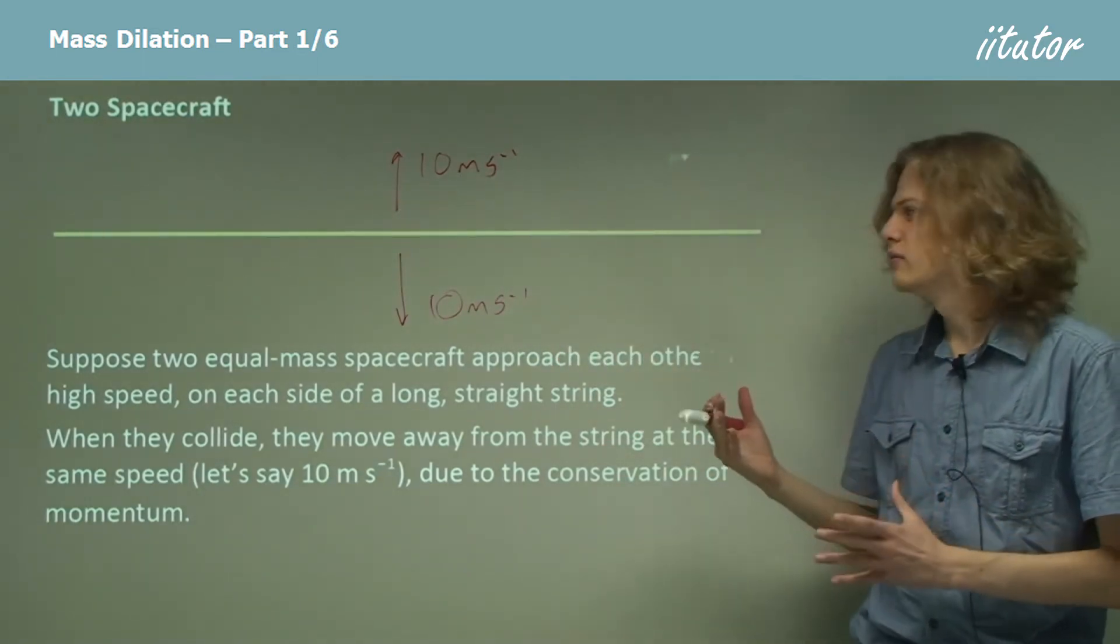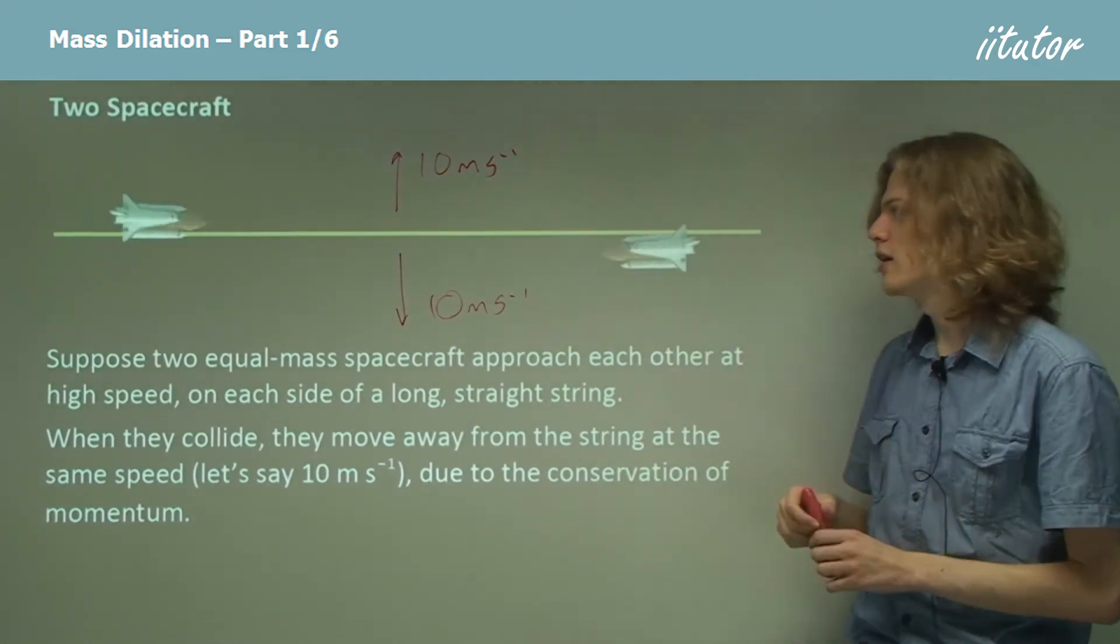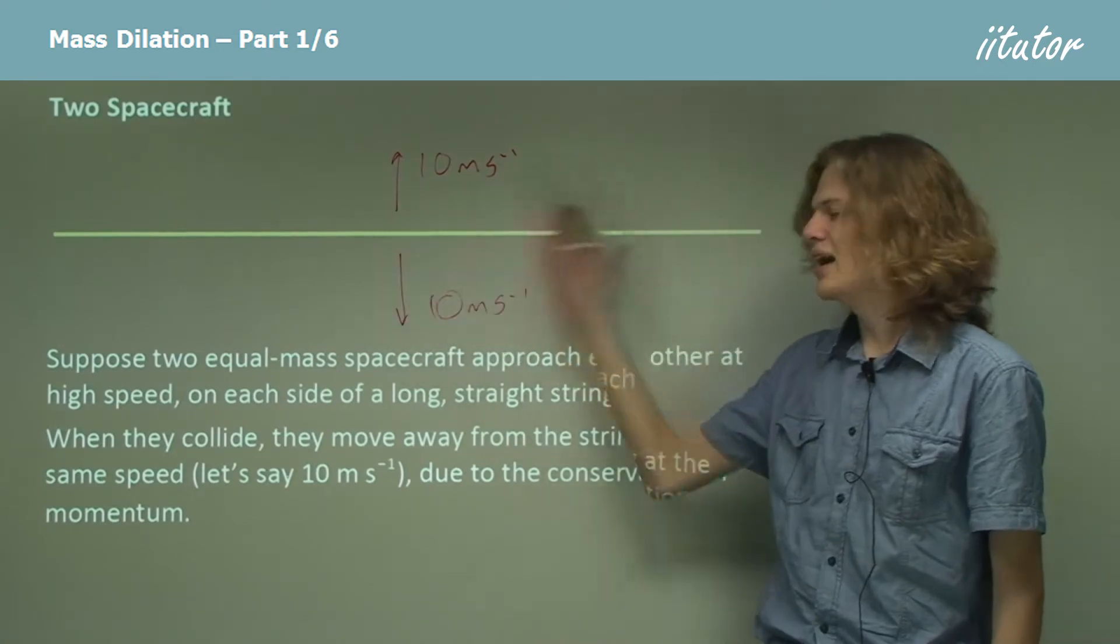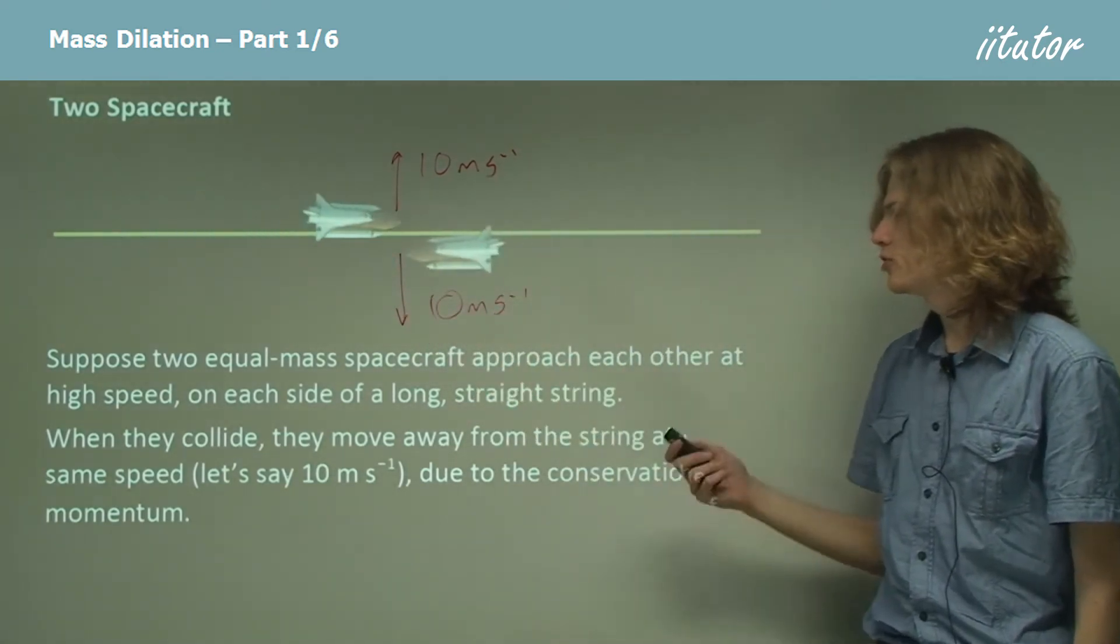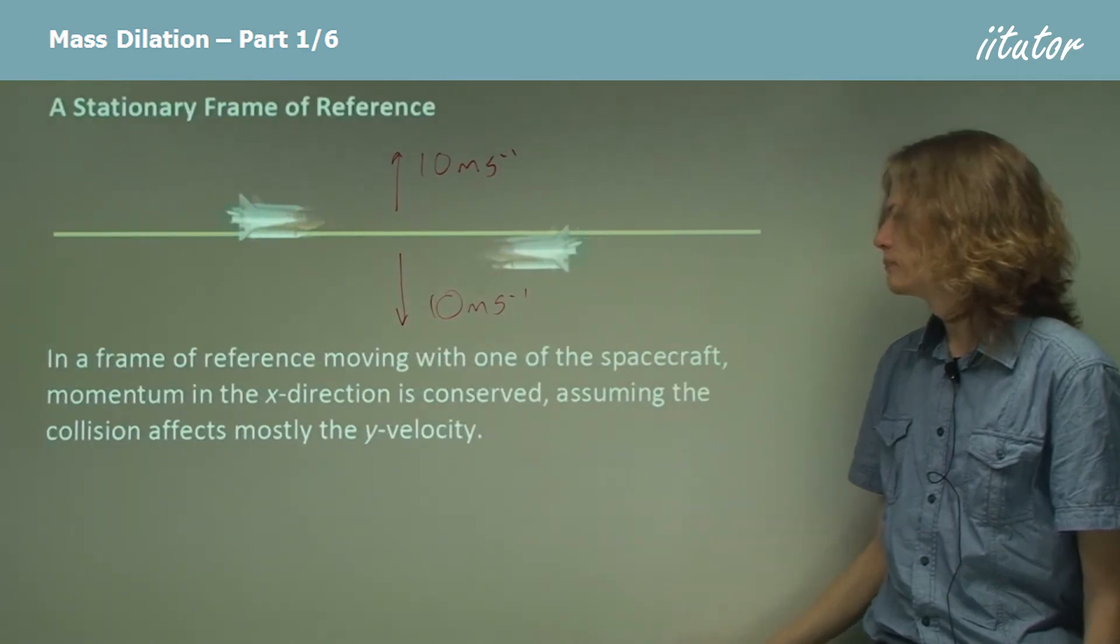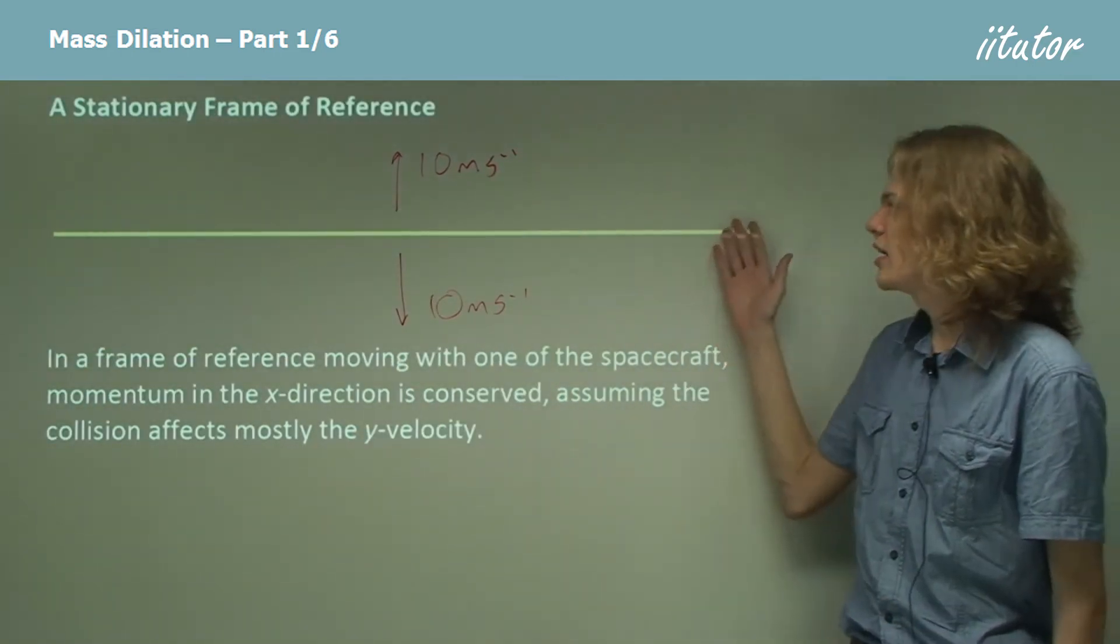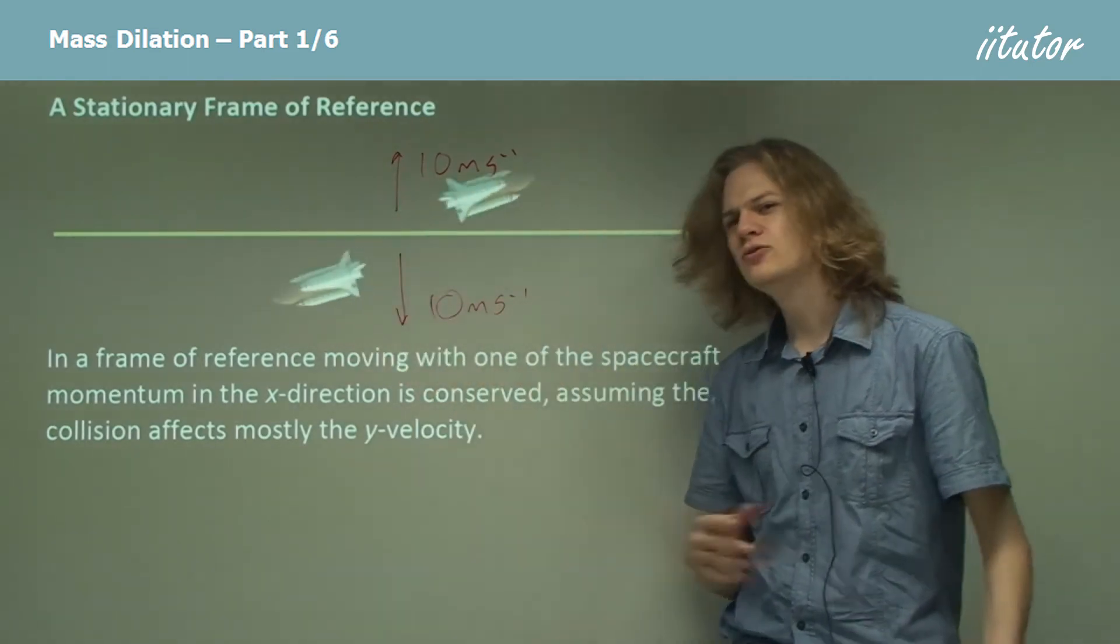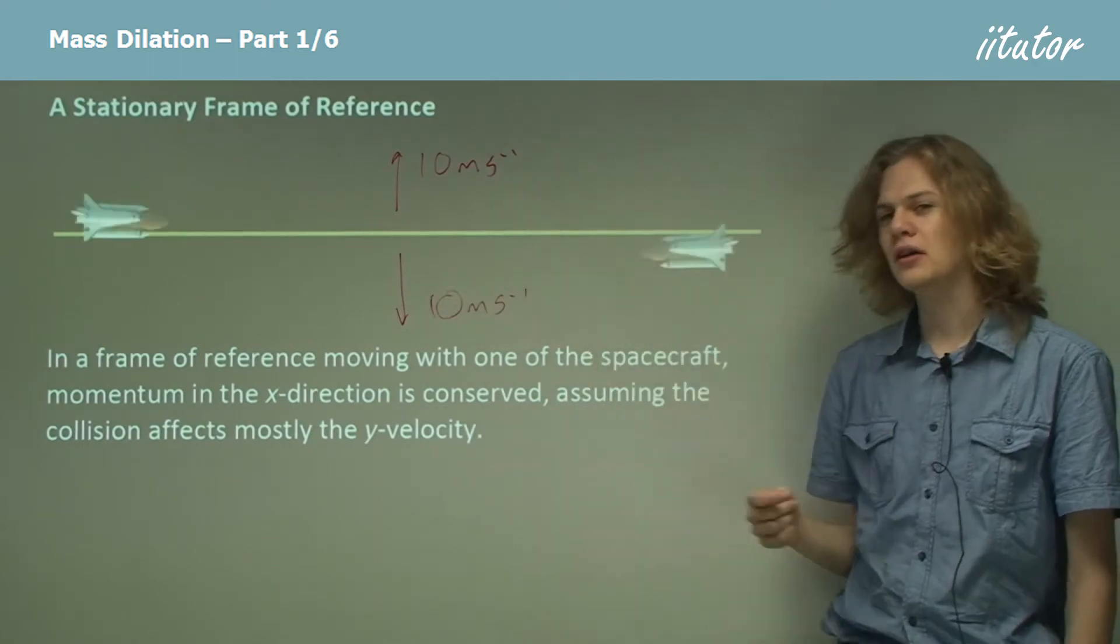We can say that the collision doesn't affect their direction in the x direction very much. So we can say that their velocity in the x direction is about the same. We can see that their velocity in that direction isn't really changing very much, especially if they only gain that amount of speed each way.